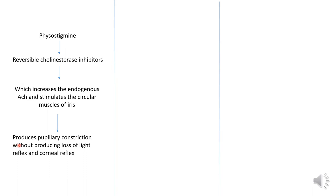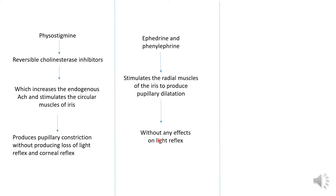Because of this, it produces pupillary constriction without producing loss of light reflex and corneal reflex. Whereas our second drug, Ephedrine and Phenylephrine, stimulates the radial muscle of the iris to produce pupillary dilation without any effect on the light reflex.